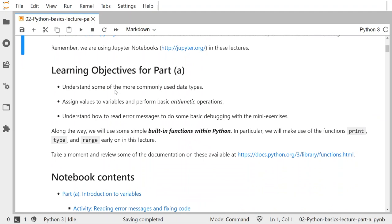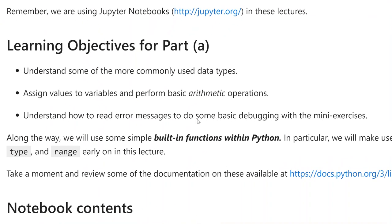The learning objectives for part A: we want to understand some of the more commonly used data types. We are going to assign values to variables and perform basic arithmetic operations. Along the way, we are also going to understand how to read error messages and do some basic debugging with the many exercises embedded in here. This is perhaps the most important thing — how to read error messages and do some basic debugging — because a lot of programming is just fixing errors.